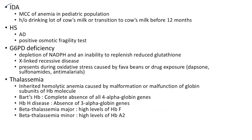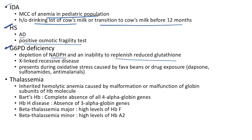Iron deficiency anemia: most common cause of anemia in pediatric population; history of drinking large amounts of cow's milk or transition to cow's milk before 12 months. Hereditary spherocytosis: autosomal dominant; positive osmotic fragility test. G6PD deficiency: depletion of NADPH and inability to replenish reduced glutathione; X-linked recessive; triggered by fava beans or drugs like dapsone, sulfonamides, and antimalarials.